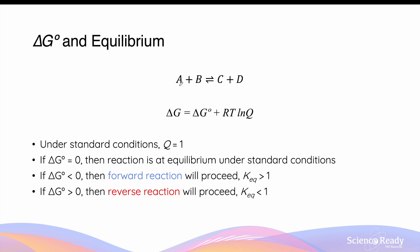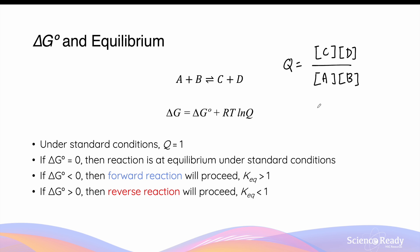Consider a generic reversible reaction where reactants A and B produce products C and D. The reaction quotient Q is calculated as the concentration of C multiplied by the concentration of D, divided by the concentrations of A and B. Under standard conditions, all substances have a concentration of 1 mol/L, so Q = (1×1)/(1×1) = 1. This applies to reactions with any stoichiometry, since any power of 1 is still 1.